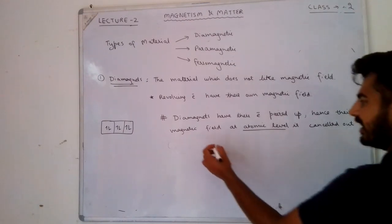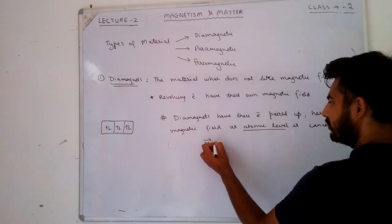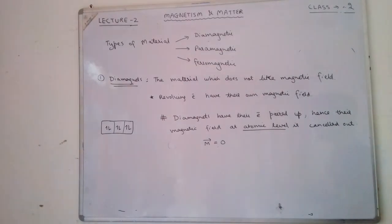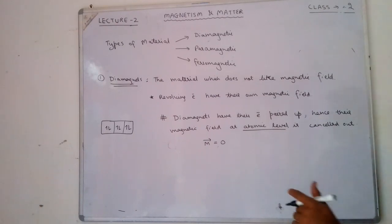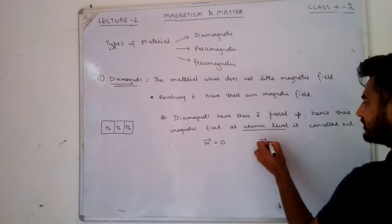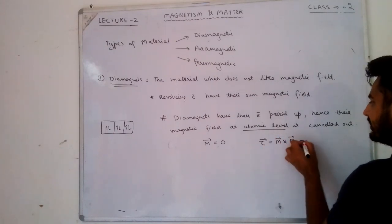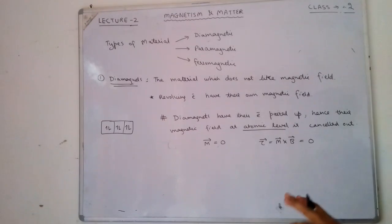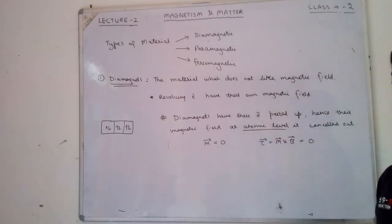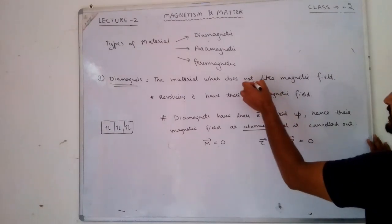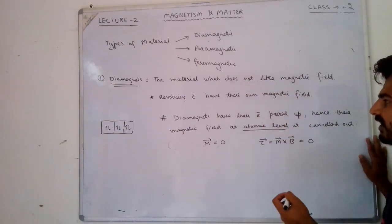Since the net magnetic moment M is zero for a diamagnet, when you apply an external magnetic field, there is no torque — because torque equals M cross B — so M being zero means it won't rotate to align with the field. It does not like magnetic field.